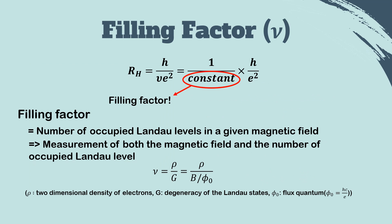Another feature in describing the quantum Hall effect is the filling factor. As I mentioned before, the Hall resistance of the quantum Hall effect is quantized and it is inversely proportional to the certain constant. We call this constant the filling factor. The filling factor is the number of occupied Landau levels for electrons in a given magnetic field, and it is defined as follows.